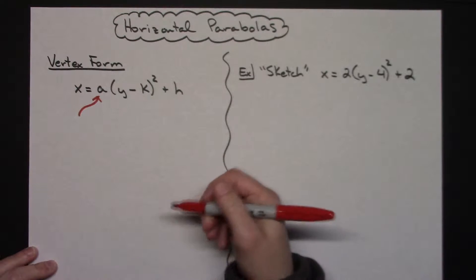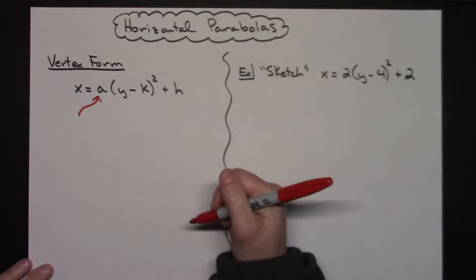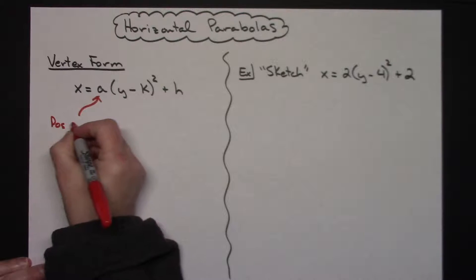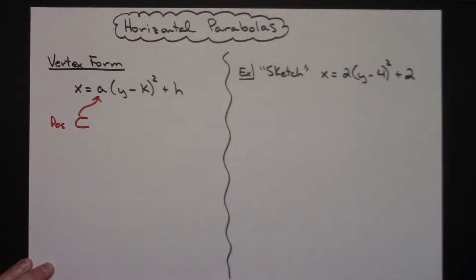Instead of either opening upright or upside down, it's going to either open to the right or it's going to open to the left. If it is a positive value, it is going to open to the right for our horizontal parabola.